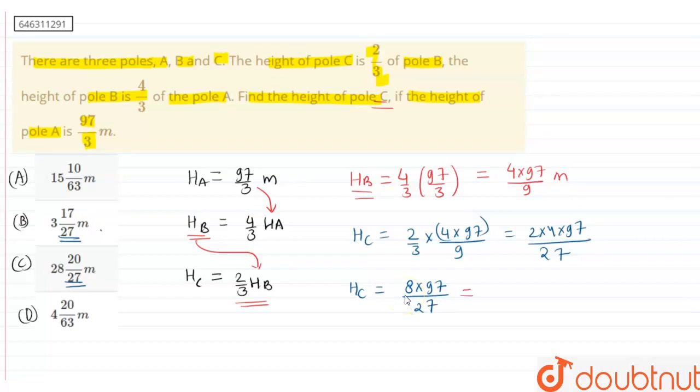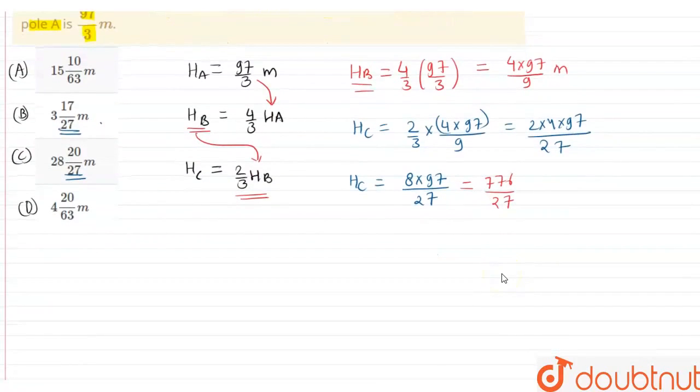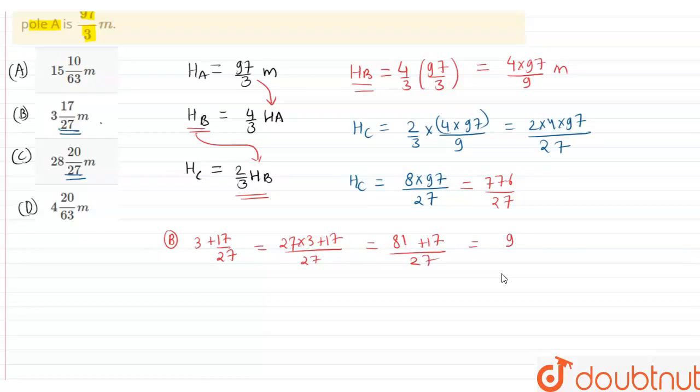On multiplication, this becomes 776 divided by 27. Now, dividing them might be a lengthier process. If you see option B, this is 3 plus 17/27. If you multiply 27 times 3 plus 17, we get 81 plus 17, which is 98. So we get 98/27. This is not our matched answer, so this is not our option.